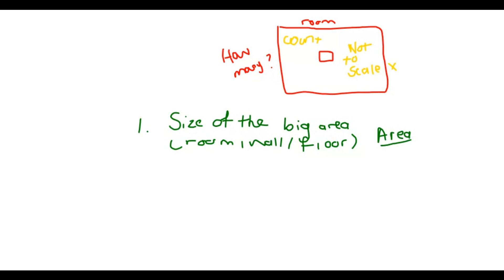And then, next, you would find, typically, the size of the small object. Of one of the small objects. So one tile, one brick, right? Because you want to know how many of those small guys will fit in there. So one square meter of carpet.